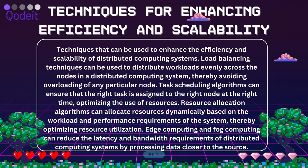Resource allocation algorithms can allocate resources dynamically based on the workload and performance requirements of the system, thereby optimizing resource utilization. Edge computing and fog computing can reduce the latency and bandwidth requirements of distributed computing systems by processing data closer to the source.